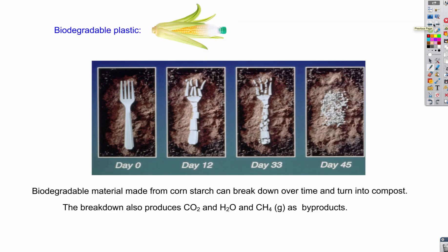The next topic is biodegradable plastic, which can be produced from corn. The issue is that corn is also a food source. If you use corn for plastic, the plastic can be recycled easily, but you are using food to make it instead of polyethylene plastic. For example, this fork made from biodegradable plastic derived from corn disintegrates after 45 days and gets composted.